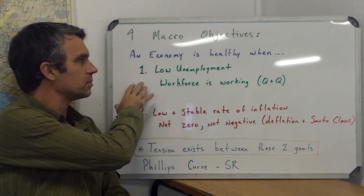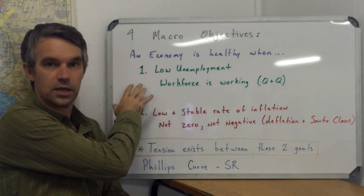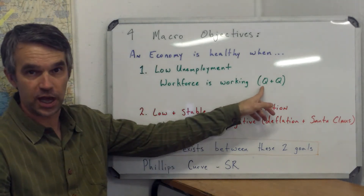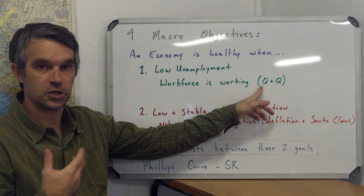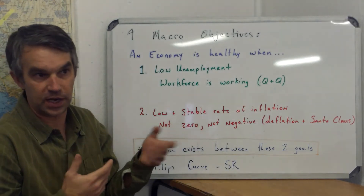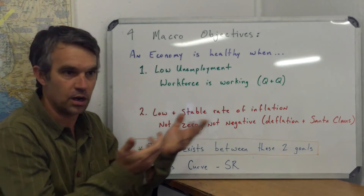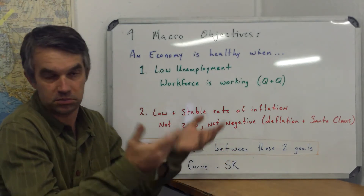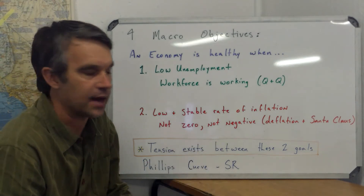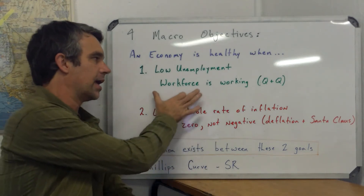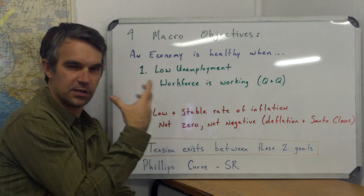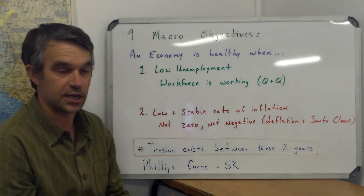The first objective is that unemployment in the country is low. And it's not just that there's a high quantity of jobs — you want to make sure that people are doing the jobs that they are trained for. For example, you don't want to see somebody who's an engineer working as a retail salesperson. And that is specific to the workforce, which is a smaller group of people than the entire population.